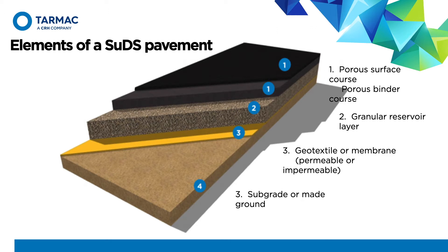We downgrade the structural contribution of a GRL, or its layer stiffness, because of its porosity. Below the GRL, you'll generally find either a permeable geotextile layer or an impermeable liner, but this depends on the specifics of the site and the scheme. These are the basic must-haves in a SUDS pavement, and I'll come back to them in a bit more detail later. There are other elements like stanks, which I'll cover as we go through the video as well.